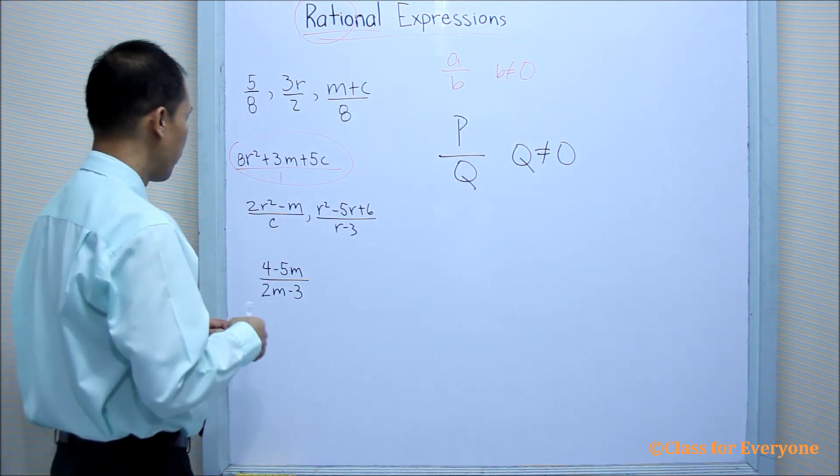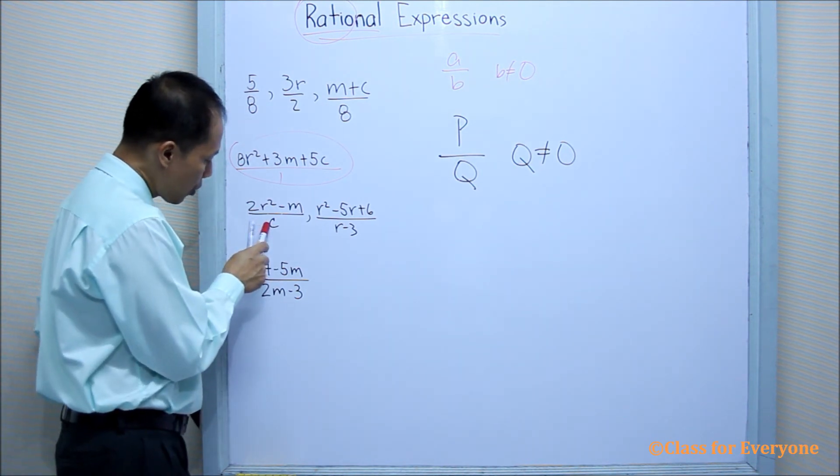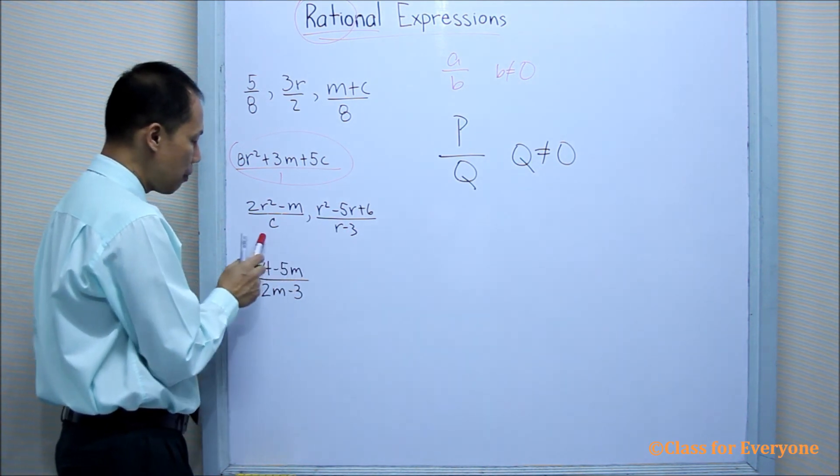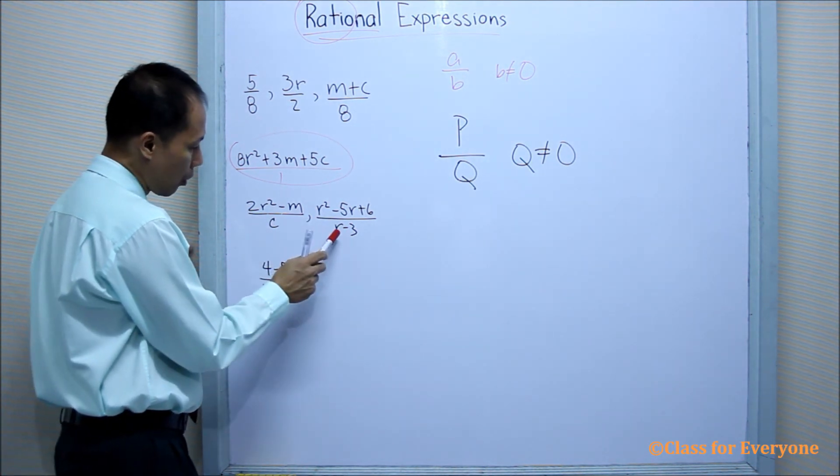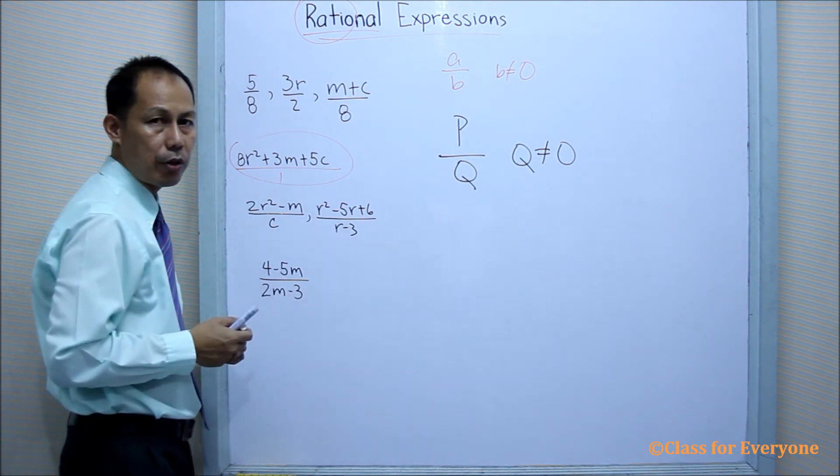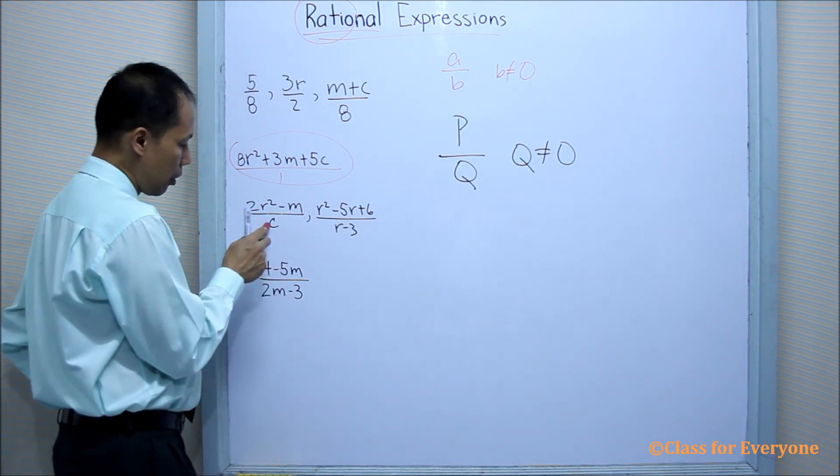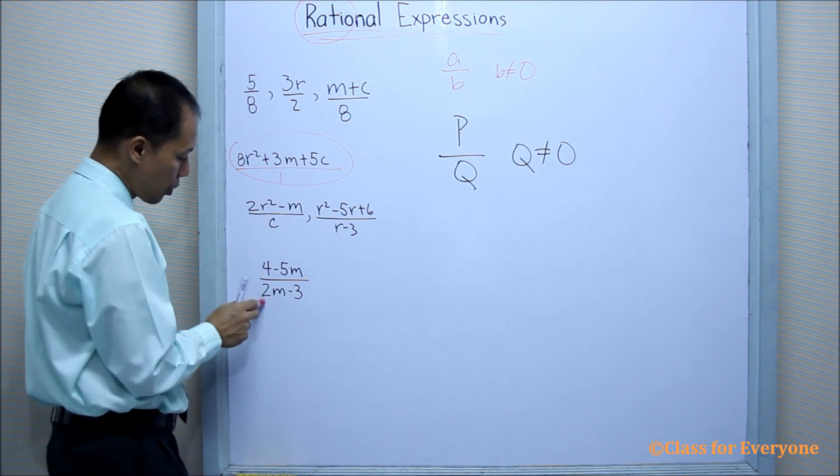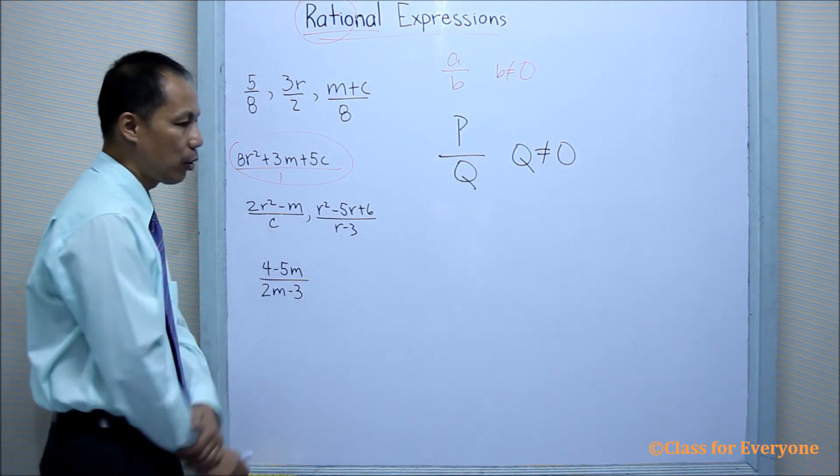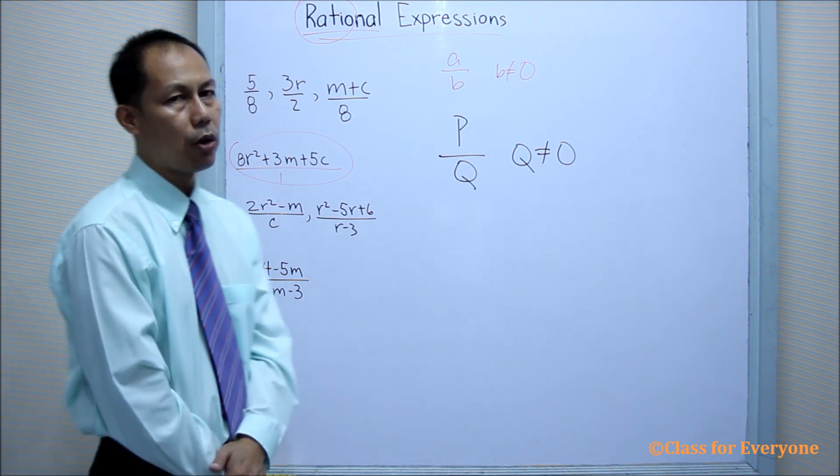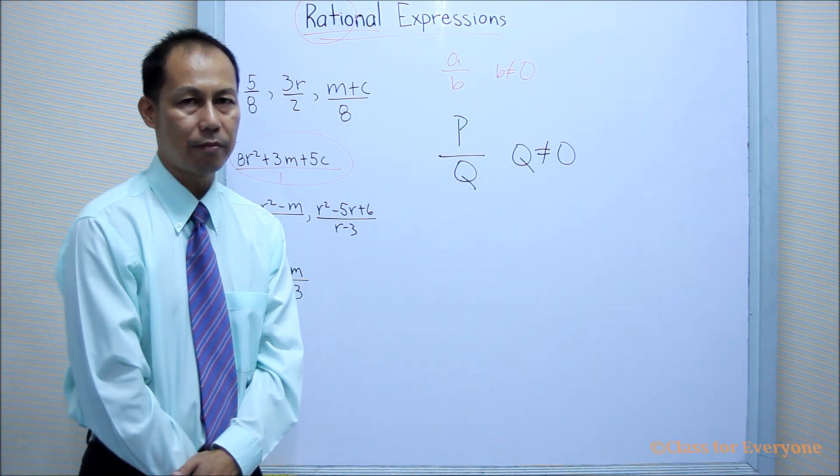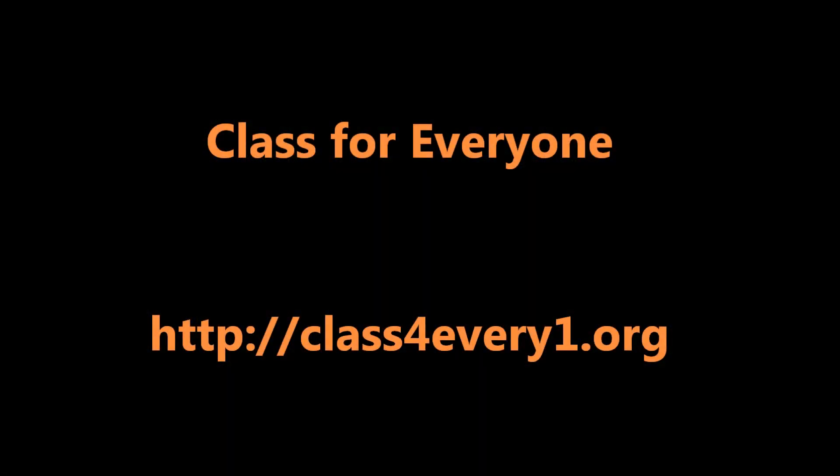And also, the values of these variables should not be equal to zero. Well, this can be equal to zero, but the denominator must not be equal to zero. And the values of the variables that will not make the denominator zero is what we call the domain or the replacement set.